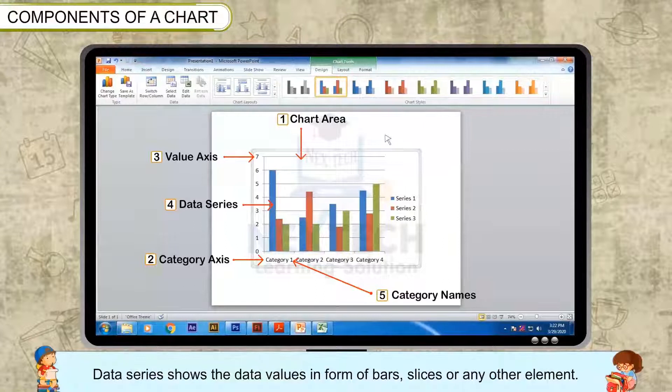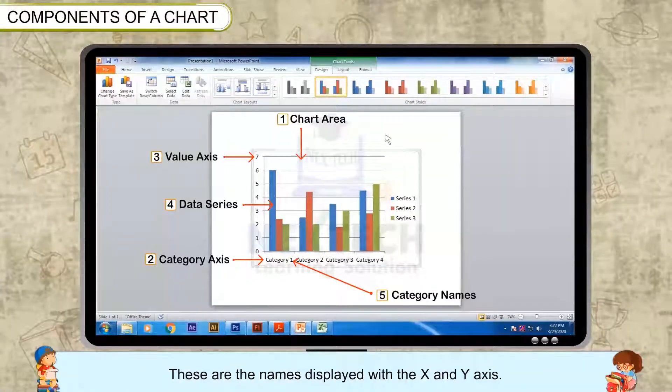Category names: These are the names displayed with the x and y axis.